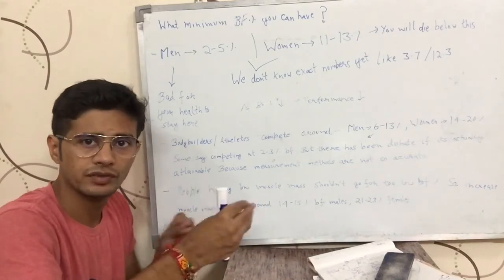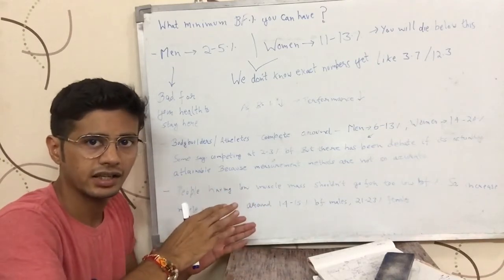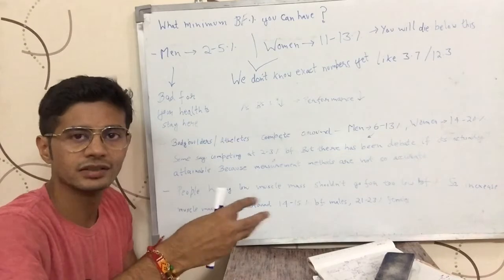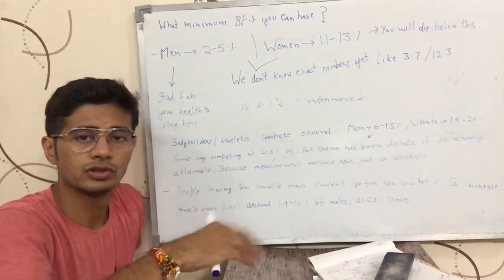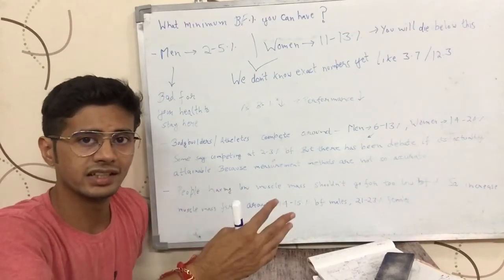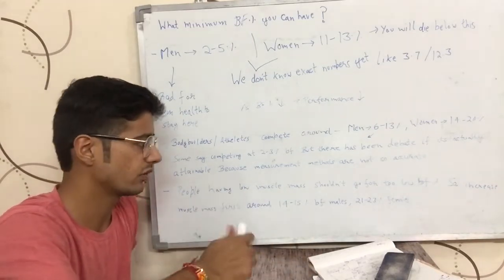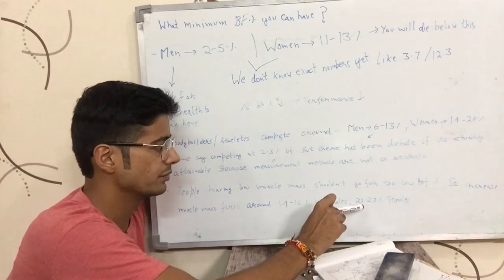Then again come back to 13, 14, 15, 16% body fat. Then again, you will gain some fat, lose that fat. Then you can try coming down to a bit lower fat percentage because you have gained some muscle. Basically, gain some muscle and then try to come down to lower fat percentage. Don't run behind abs.